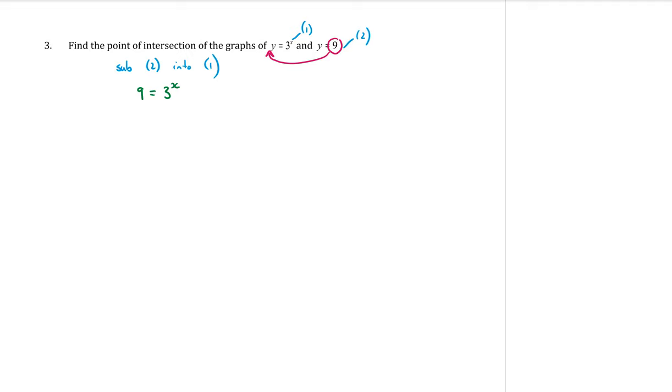Now these are exponential equations. To solve them, we want to write both the left-hand side and the right-hand side with the same base. At the moment, my exponential has a base of 3. So I can write 9 with a base of 3. 3 squared equals 9. So once the bases are the same, the powers will be equal. So x equals 2.